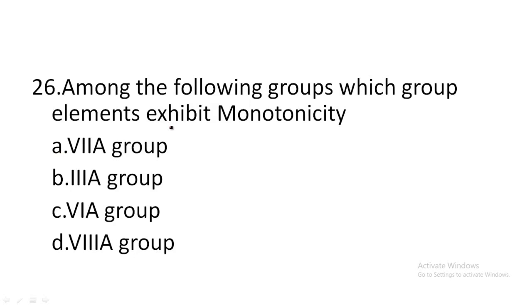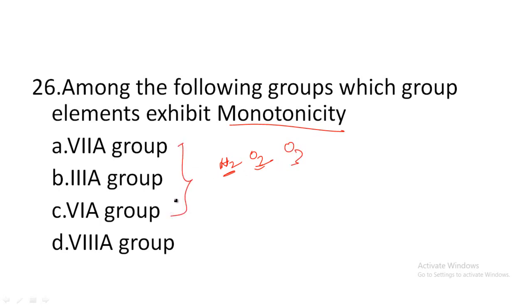Among the following groups, which group elements exhibit monoatomicity? Option A: 7th group, option B: 3rd group, option C: 6th group, option D: 8th group. Monoatomicity means single atoms, unlike diatomic molecules like H2, N2, O2. The 8th group elements — helium, neon, argon, krypton, xenon, radon — all exist as single atoms. So the 8th group elements exhibit monoatomicity.